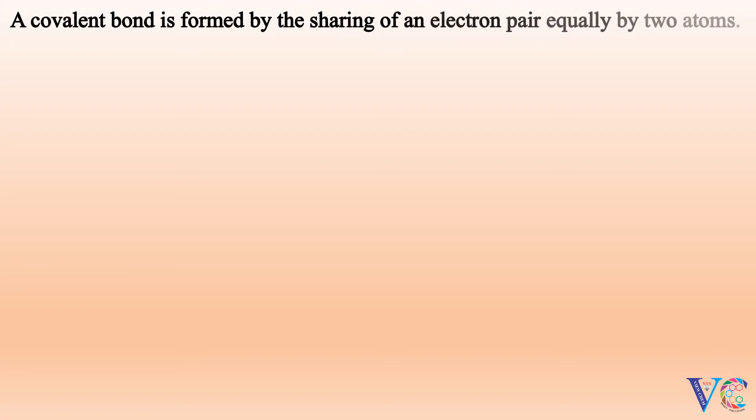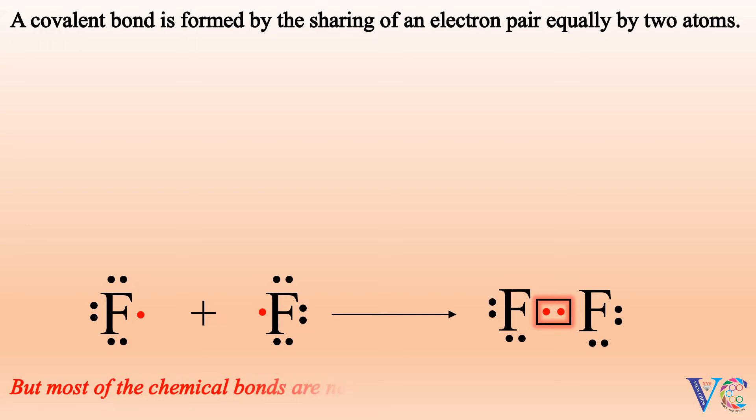A covalent bond is formed by the sharing of an electron pair equally by two atoms. Sharing of electron pair equally by two fluorine atoms. But most of the chemical bonds are neither purely ionic nor purely covalent.